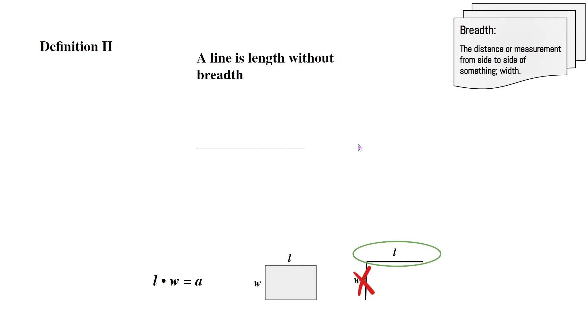Definition 2: A line is length without breadth. Now you may be wondering, what is breadth? It's a bit of a weird word, and it sounds like something to do with breath, but it actually means the distance or measurement from side to side of something. It's basically width. So with this information, we can reword the definition. A line is length without width.